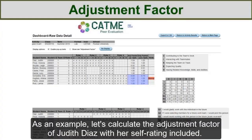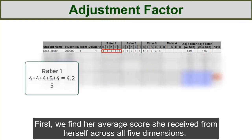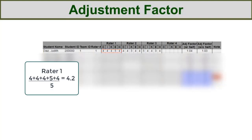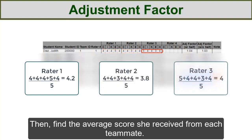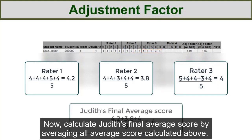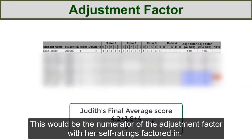As an example, let's calculate the adjustment factor for Judy with her self-rating included. First, we find her average score she received from herself across all 5 dimensions. Then, find the average score she received from each teammate. Next, calculate Judy's final average score by averaging all the average scores calculated above. This will be the numerator of the adjustment factor with her self-ratings factored in.